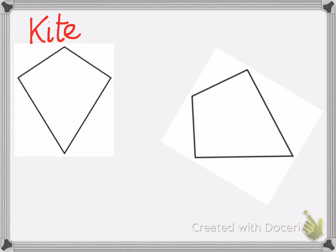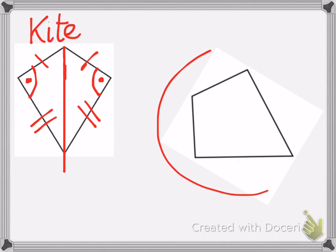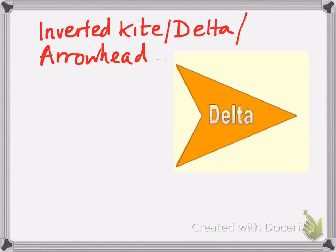Moving on to a kite. A kite has got two short lines. They are not parallel to each other, but they are equal. We have one line of symmetry running right down the middle, which means that whatever this angle is here will be the same as this angle there. Sometimes they present a kite in a slightly different way where the line of symmetry is not vertical. Sometimes the sticky-outy bit becomes a sticky-inny bit on a kite, and we call this an inverted kite, or a delta, or an arrowhead.